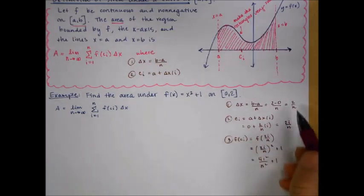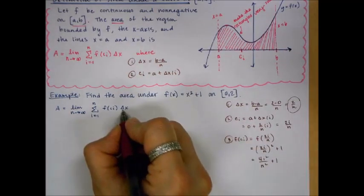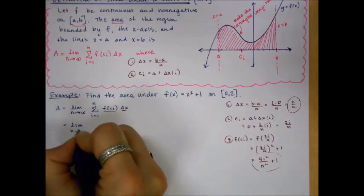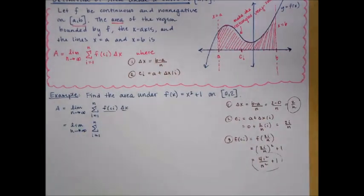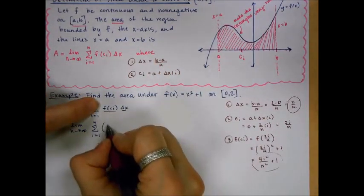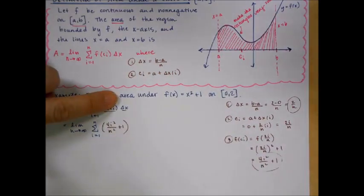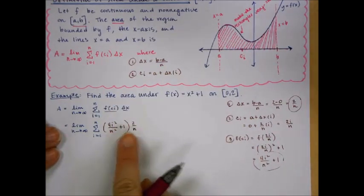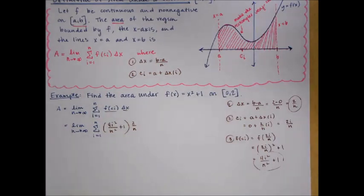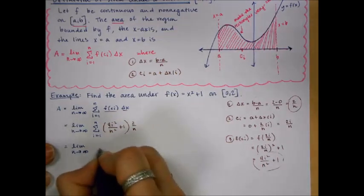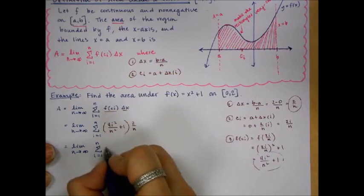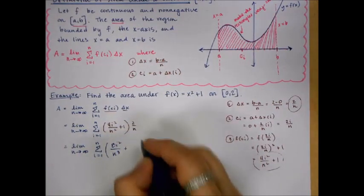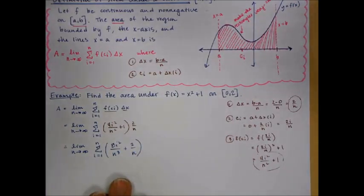Now substitute: f of c sub i is the height, 4i² over n² plus 1, and delta x is the width, 2 over n. Multiply height times width to get the area of each rectangle. This gives us 8i² over n³ plus 2 over n. That's the setup — now we can start using our summation properties and formulas.